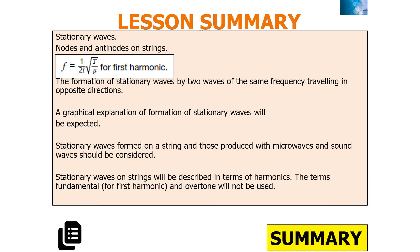To summarize today's lesson, we've looked at stationary waves and nodes and antinodes on strings. We've looked at the equation f = 1/(2L) × √(T/μ), which gives the frequency for the first harmonic. We've seen that stationary waves are formed by two waves of the same frequency travelling in opposite directions, and considered stationary waves formed on strings, by microwaves, and by sound waves.